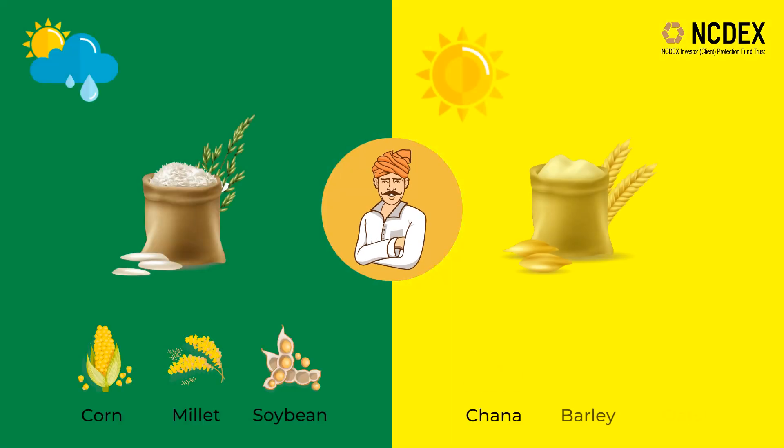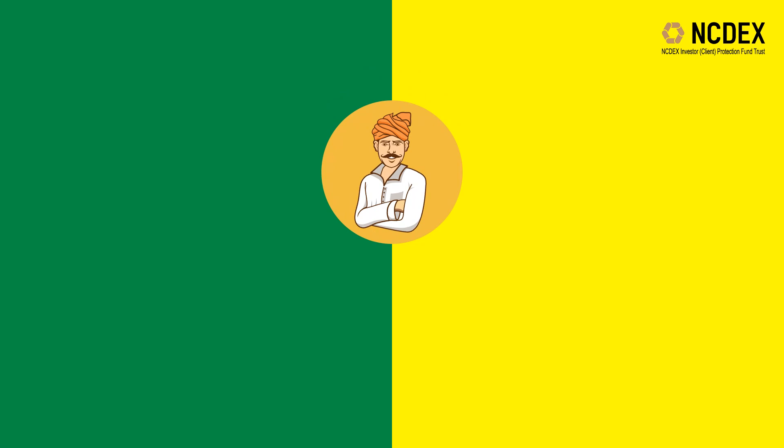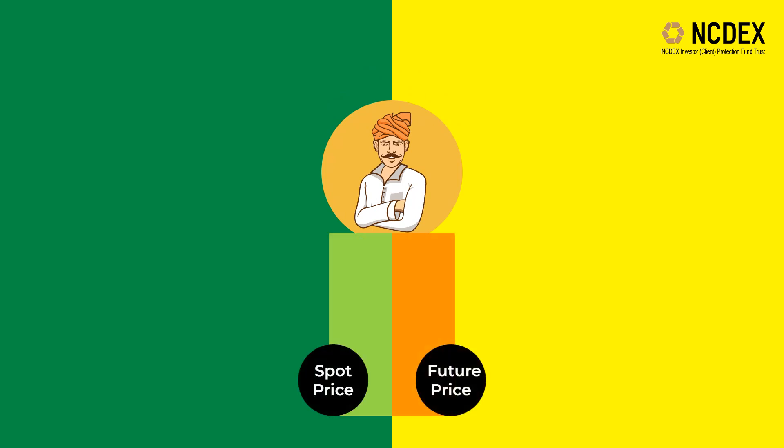Exchanges also help farmers make important decisions, such as what to sow. There are mainly two cropping seasons in India — Kharif and Rabi. During each season, a farmer chooses what to sow from three or four crops. Looking at exchange-traded prices for contracts expiring around the time when his crop would be ready may help him make informed decisions on which crops will give a better return.